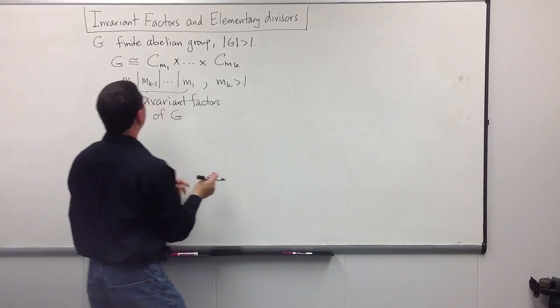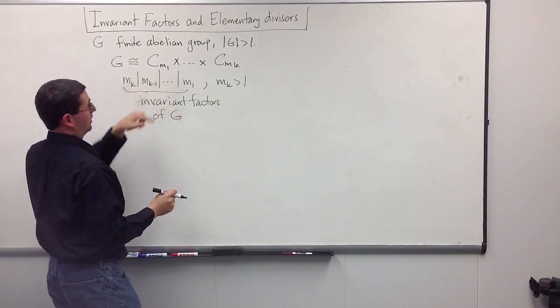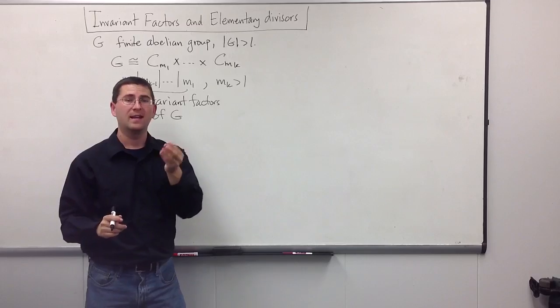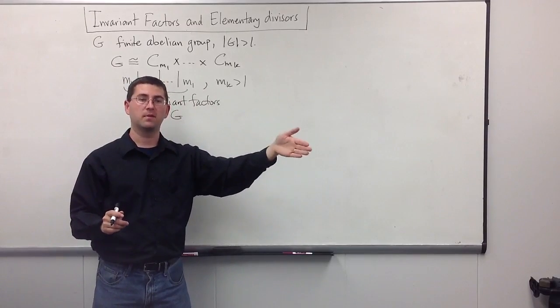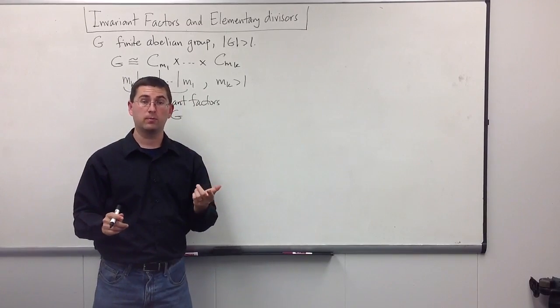So, in fact, what we know is, if we took, for instance, just one of these cyclic groups, Cm1, we could take M1 and decompose it as a product of primes. And by the result we proved in the last video, we would know we could then break up Cm1